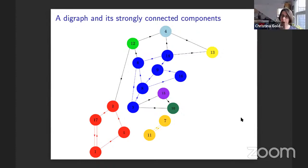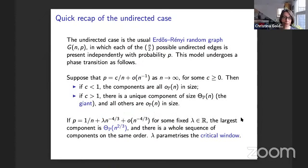I want to start by giving a quick recap of the undirected case, which is the usual Erdős-Rényi random graph GNP. In that setting, each of the n-choose-two possible undirected edges is present independently with probability P. And that model famously undergoes a phase transition, which I'm just going to remind you of briefly here.